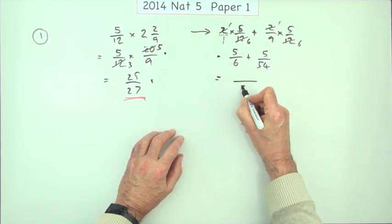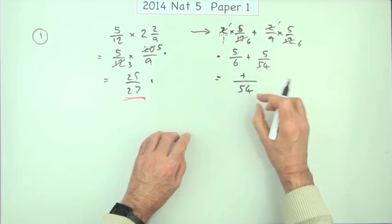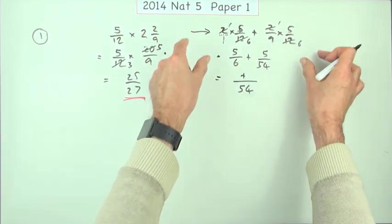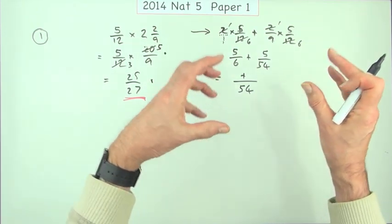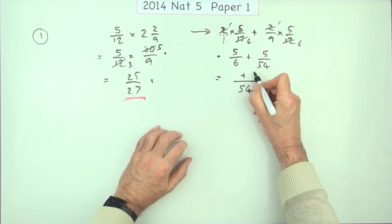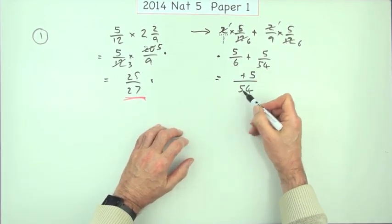So I have to change them both into 54ths. Now at least I don't need to write that out twice, because once they're both out of 54, then the answer will just be so many over 54. So that stays as 5, 6 into that obviously goes 9, 9 times 5 is 45. So you've got 50/54.